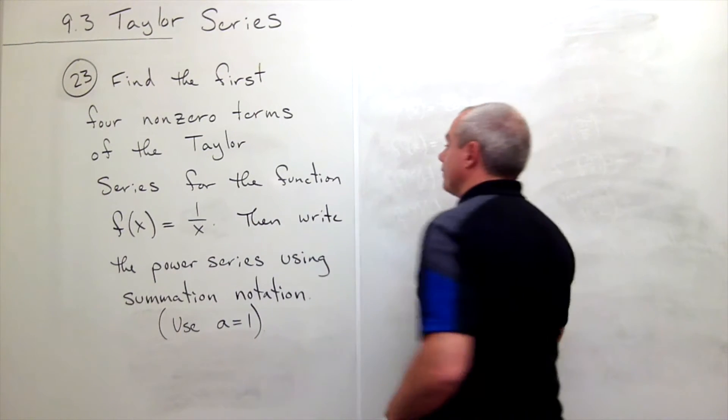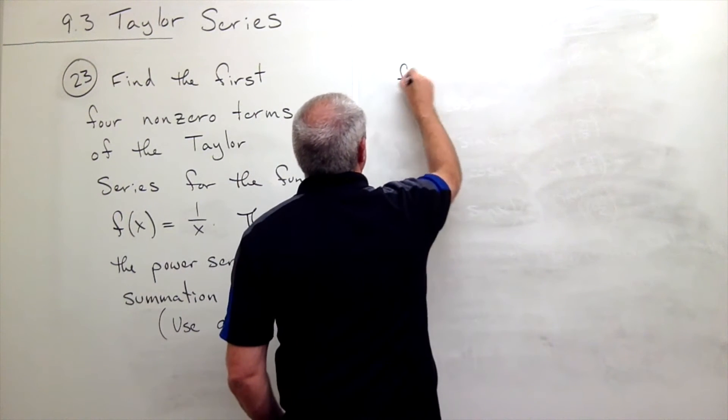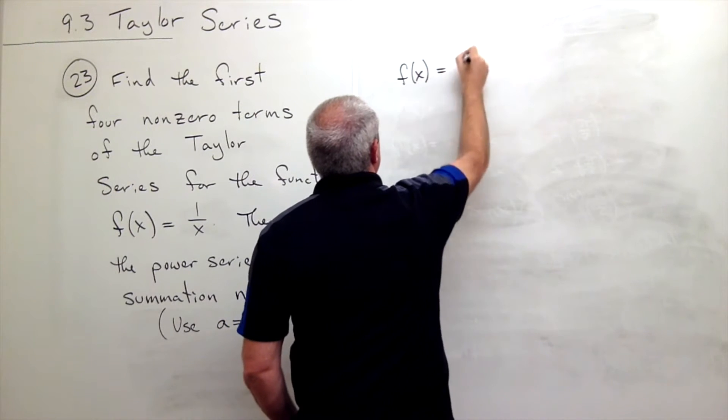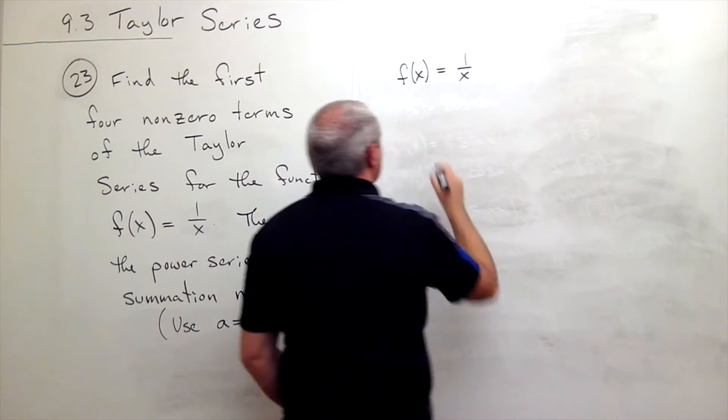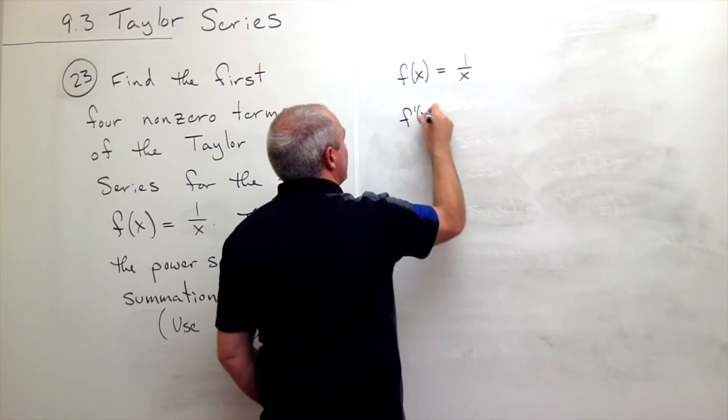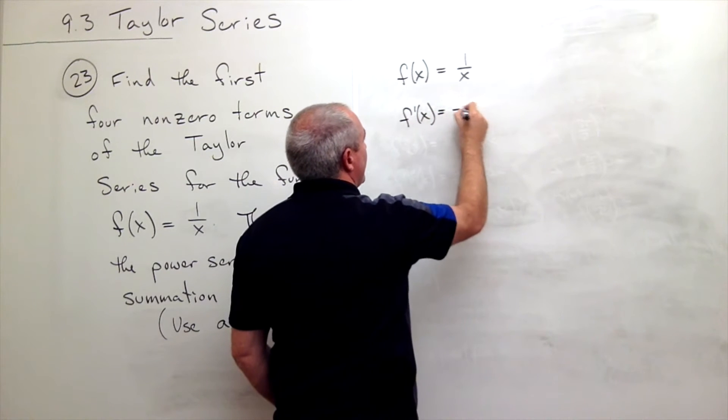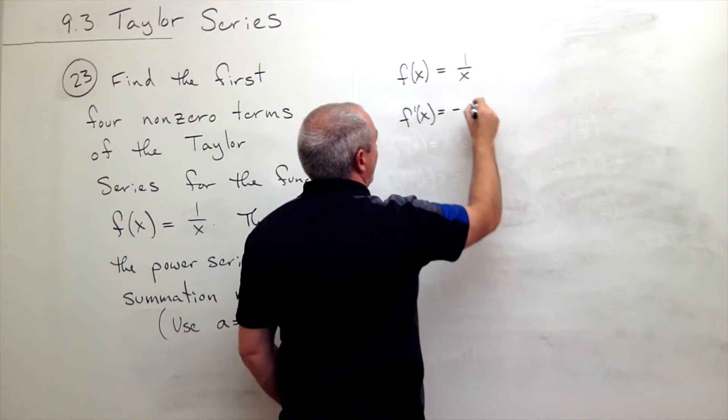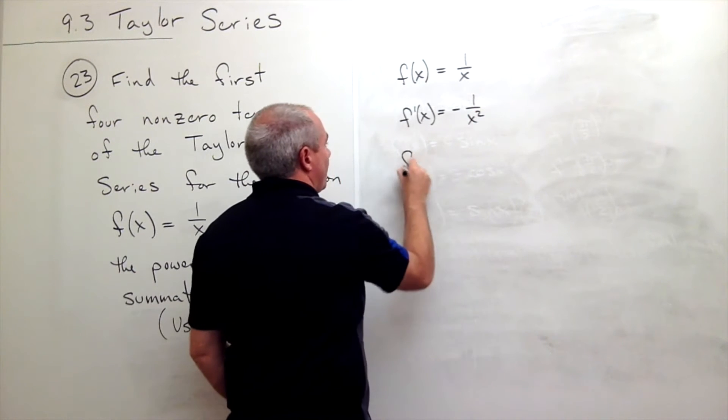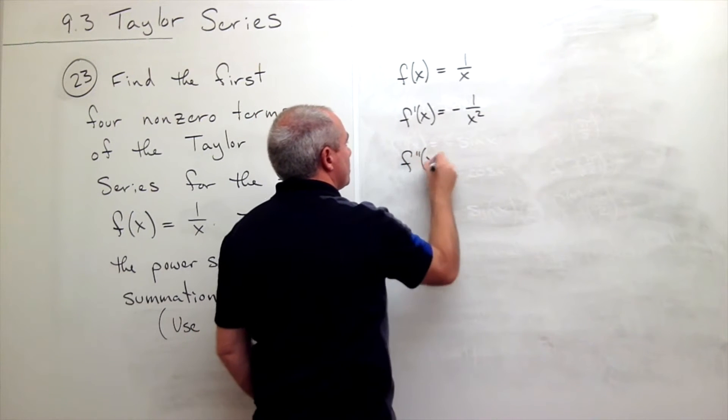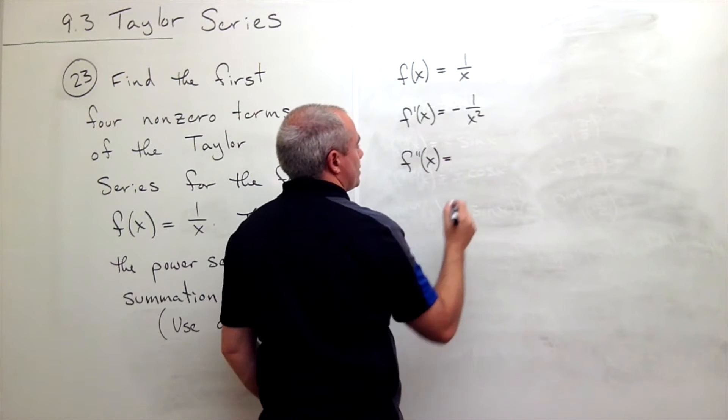So let's start that way. I'm going to write down f of x equals one over x, so f prime of x is equal to negative one over x squared, so f double prime of x is equal to two over x cubed.